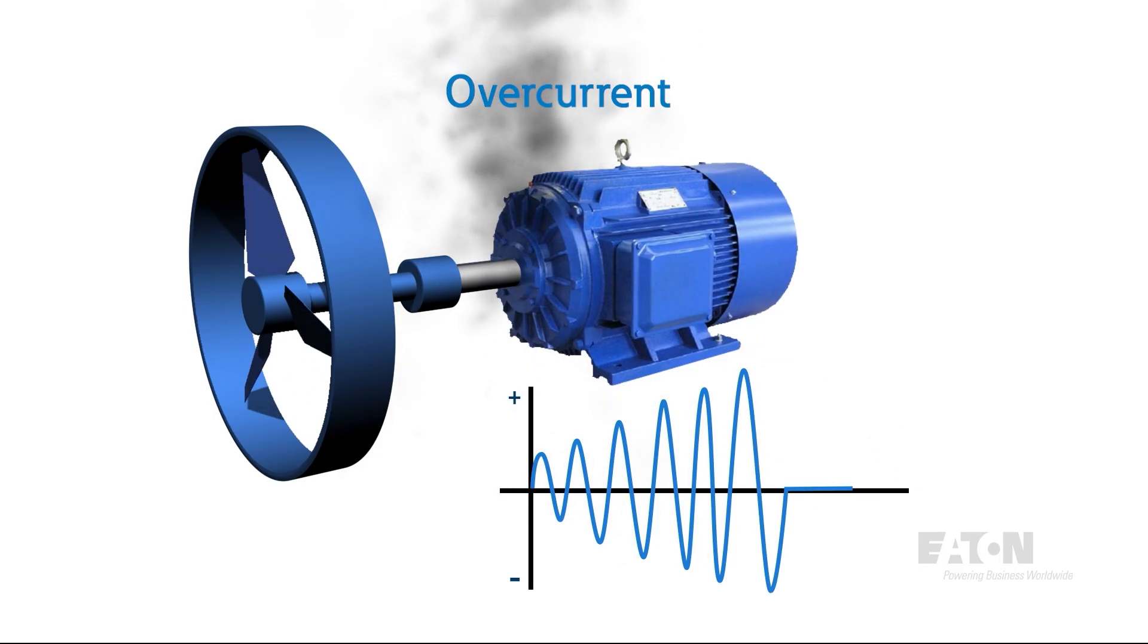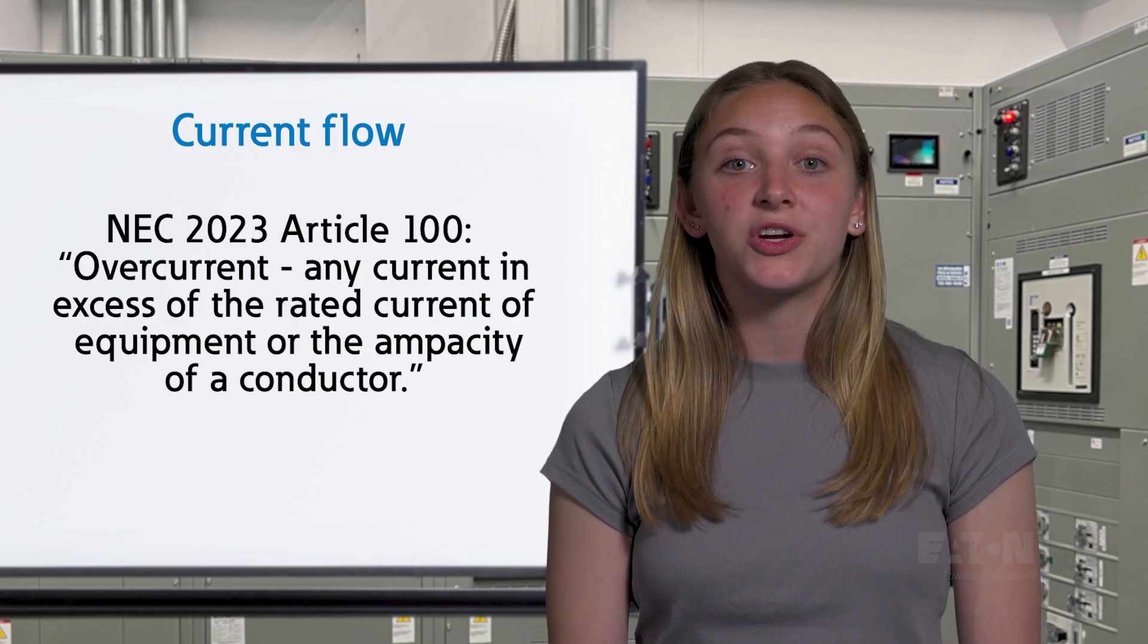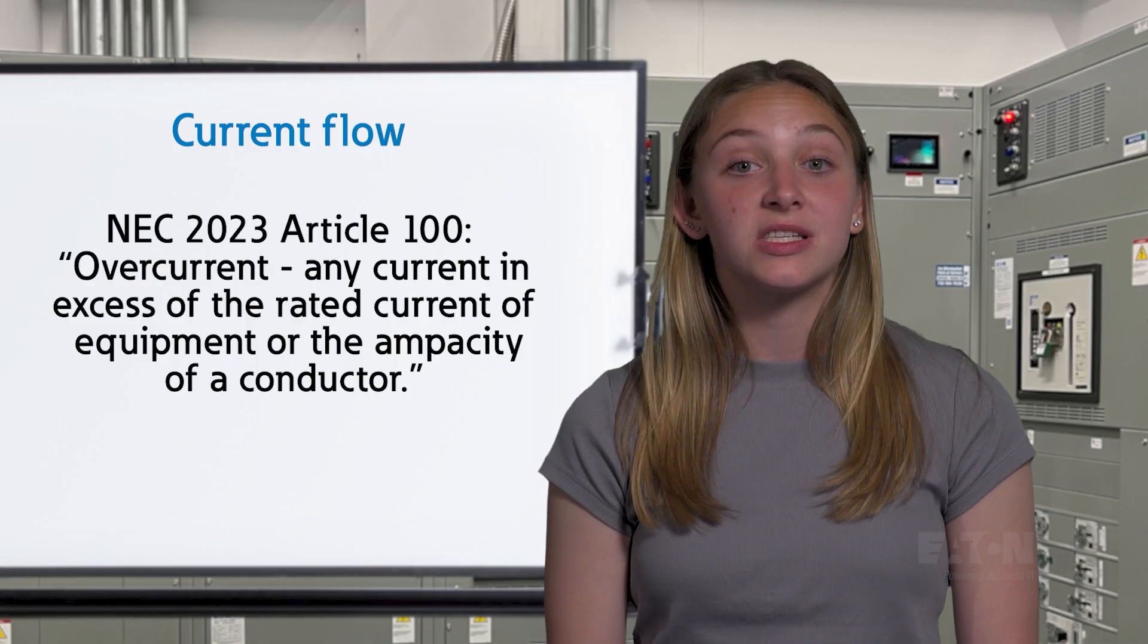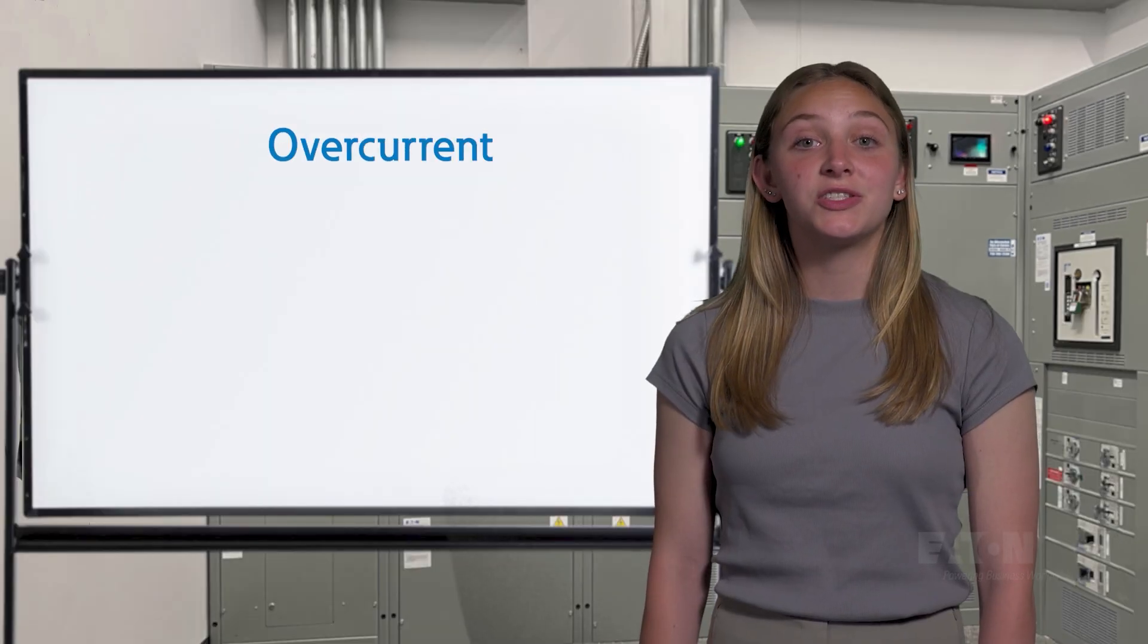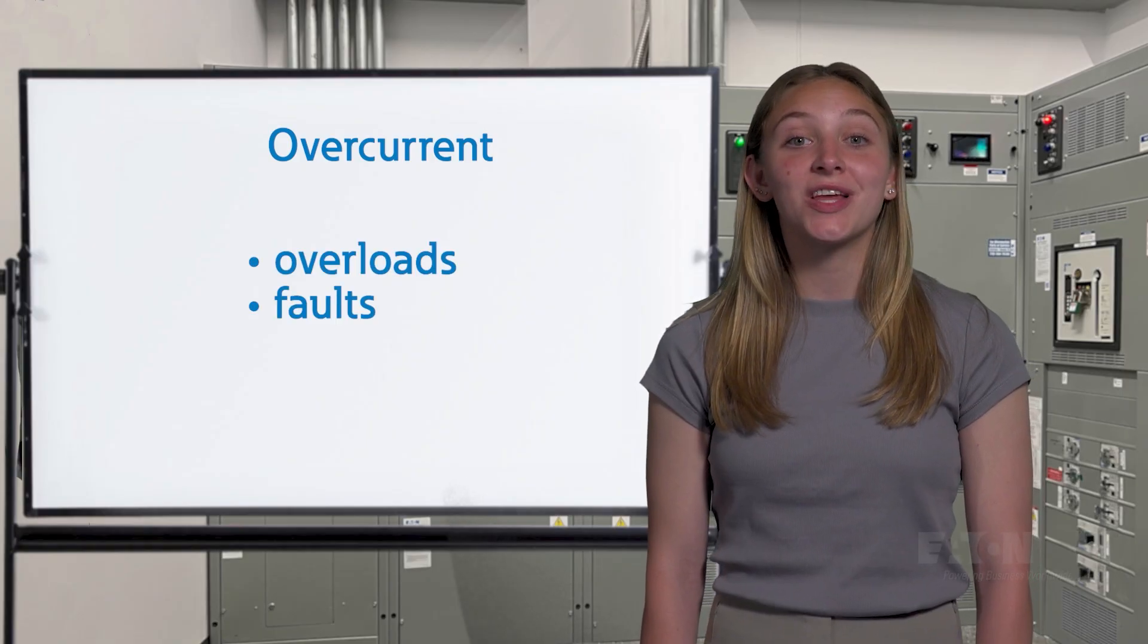Therefore, the National Electrical Code, or NEC, specifically highlights overcurrent as a condition whenever current exceeds an equipment or system's rating. Overcurrent situations can be split up into two main categories: overloads and faults.